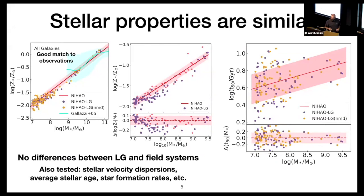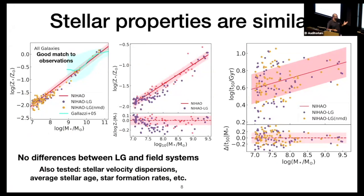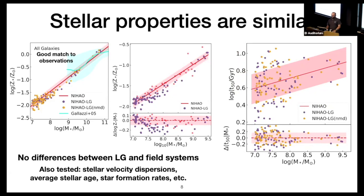I'm showing stellar metallicity as a function of stellar mass. Ni Hao is in red, and the points are local group dwarf galaxies, zoomed in on the dwarfs. There's not a lot of difference — maybe local group dwarf galaxies have a slightly metal-poor stellar population, but statistical tests don't necessarily confirm that. On the right panel, I have the time to accumulate 50% of stellar mass, and again, local group falls on the Ni Hao field. I also tested stellar velocity dispersion, star formation rate, and average stellar age — they all come out to be about the same.